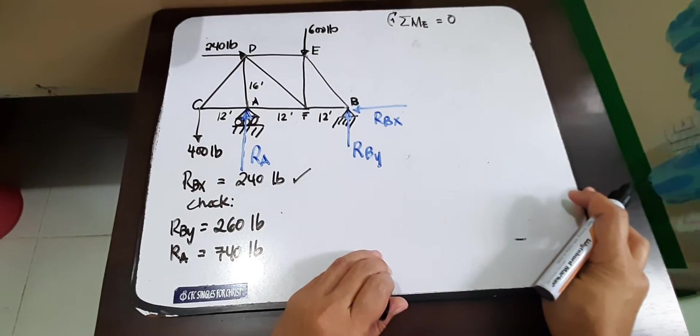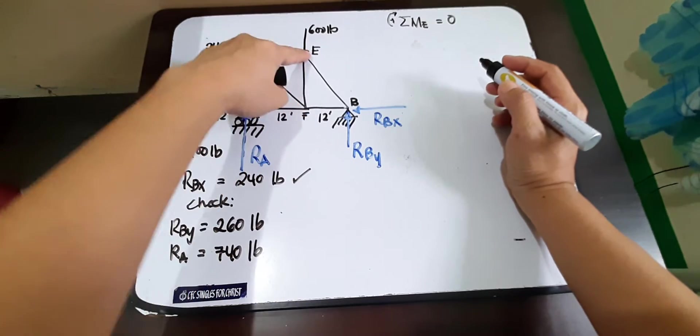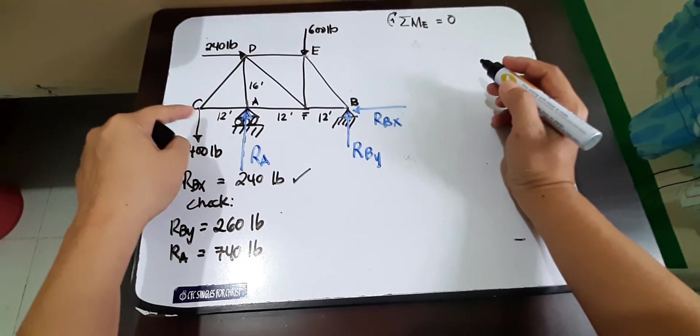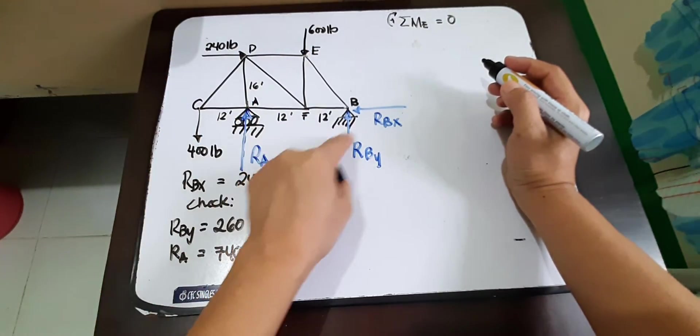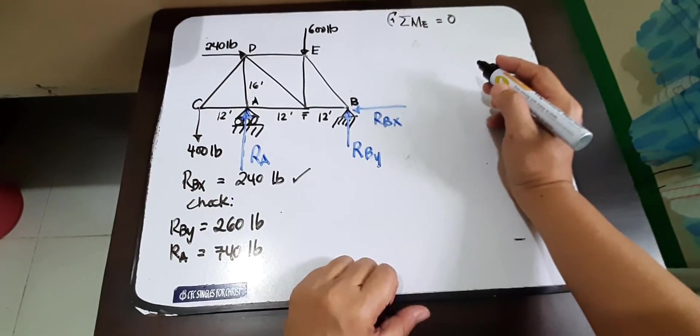Okay, so if we're going to take the moment at E, then we are gonna consider only one, two, three, and four forces. These two will not have any moment arm.